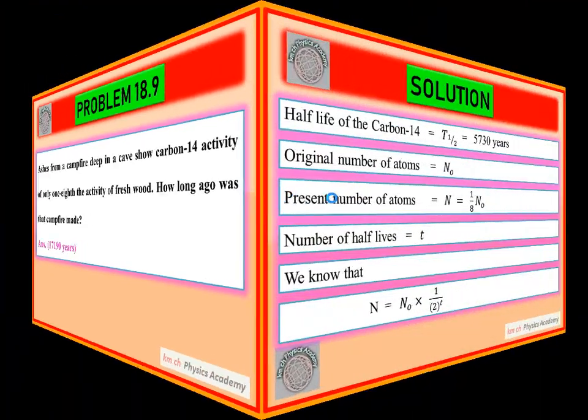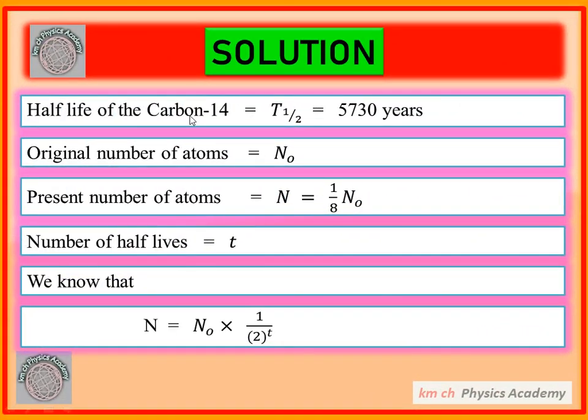Half life of carbon-14, T₁/₂ kitni hoti hai? Five thousand seven hundred and thirty years hoti hai. Yeh value hume yaad honi chahiye, hume ne yeh khud se lagai hai kyunke jo statement hai us mein yeh carbon-14 ki half life hume nahi batai gai hai. Half life hume khud se yaad honi chahiye carbon-14 ki, 5730 years. Original number of atoms usse ko hum N₀ rakh liethe hai.